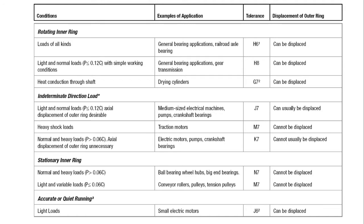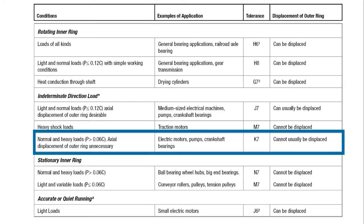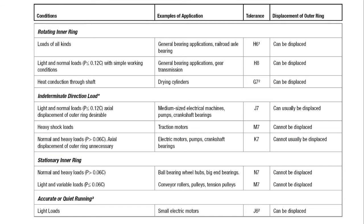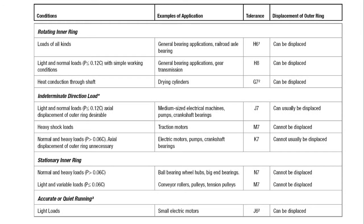Electric motor applications, especially ones that are hooked up by couplings or face mounted into a speed reducer, have no clearly defined direction of loading. Because there are no components creating force in a constant direction, we should use the indeterminate direction load portion of this table. Again, we are going to use the normal to heavy load condition as we determined earlier. As we follow the row across, we see that we should use a K7 fit for our housing tolerances. We can also read notes about whether the tolerance would allow the outer ring to move axially within the housing.